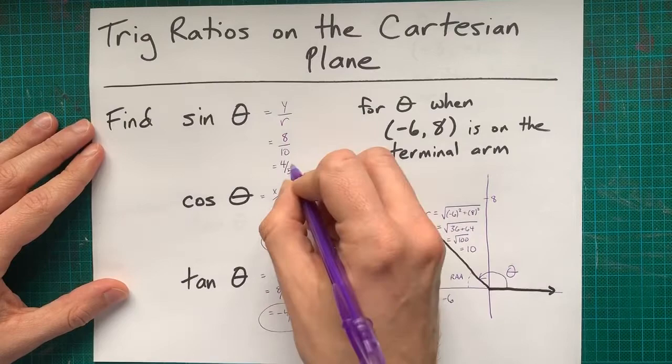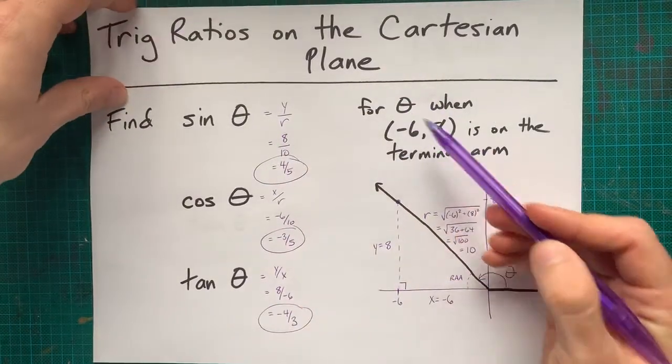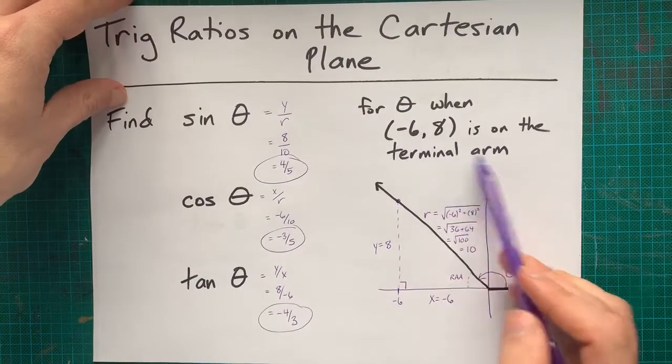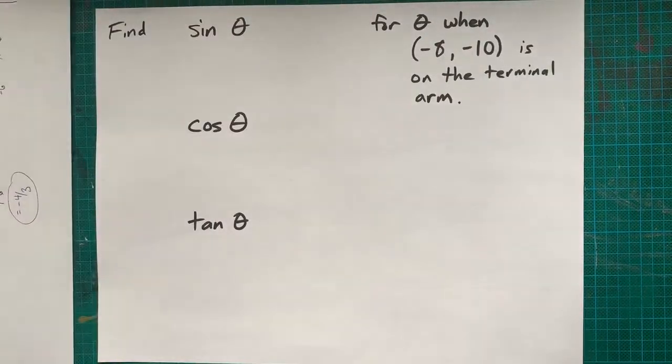These are the exact values for the trig ratios for theta when theta goes through this point on its terminal arm. Shall we do one more?